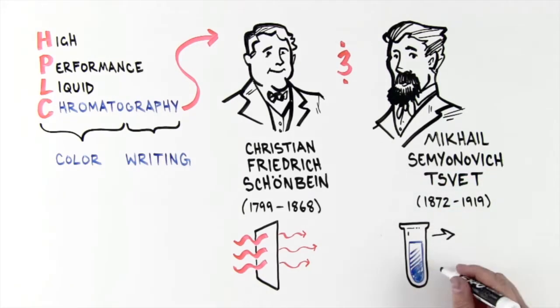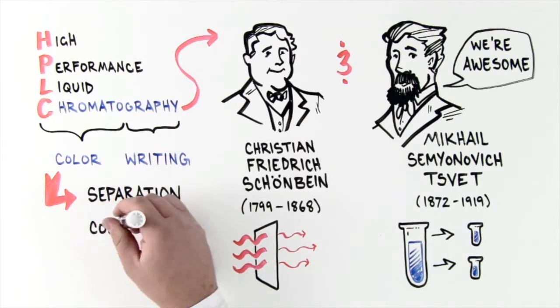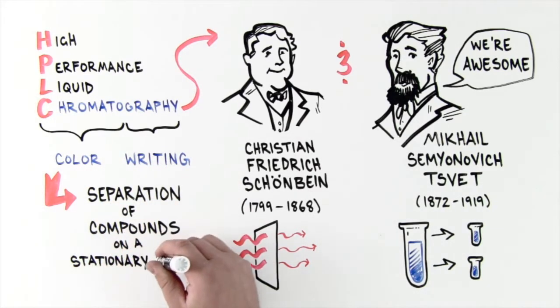who separated plant pigments in calcium carbonate columns. High-performance liquid chromatography is the separation of compounds on a stationary phase column.